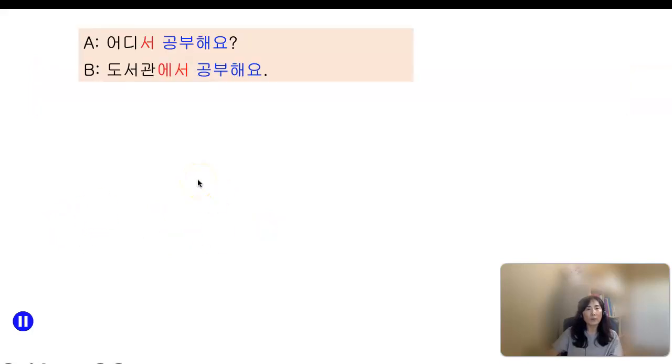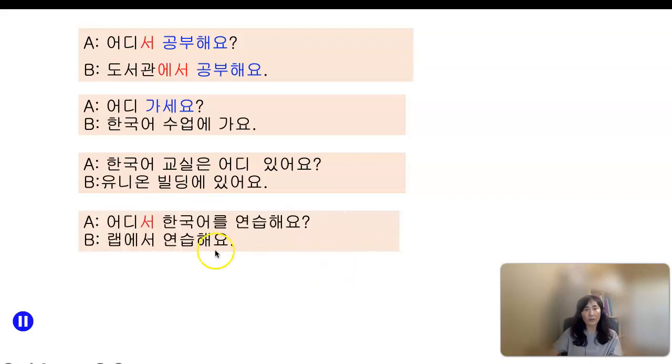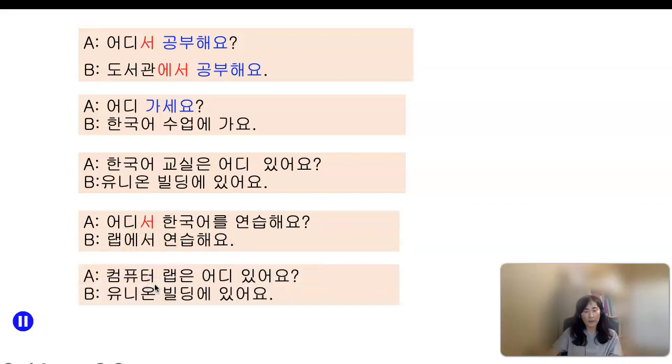어디서 공부해요? 도서관에서 공부해요. 어디 가세요? 한국어 수업에 가요. 한국어 교실은 어디 있어요? Union building에 있어요. 어디서 한국어를 연습해요? 랩에서 연습해요. 컴퓨터 랩은 어디 있어요? Union building에 있어요.